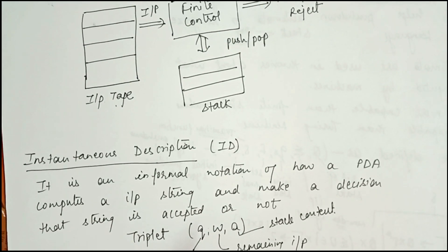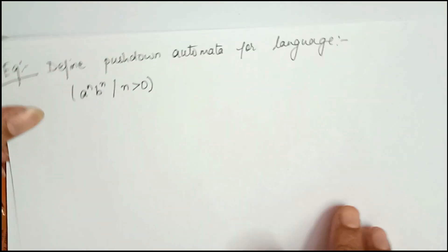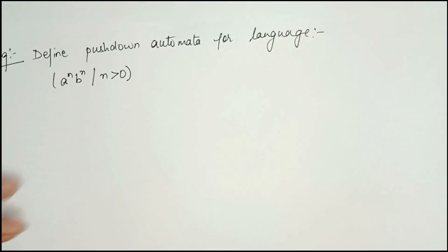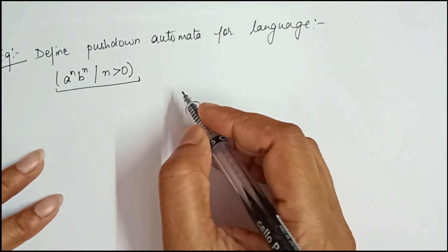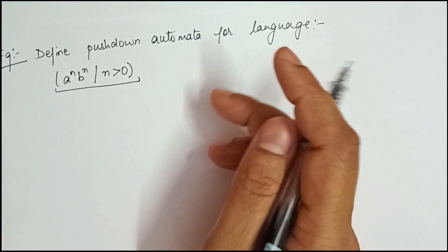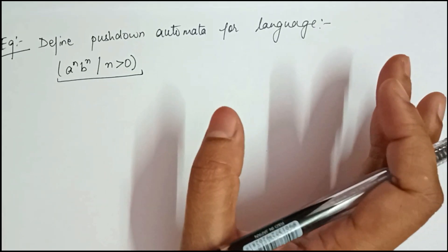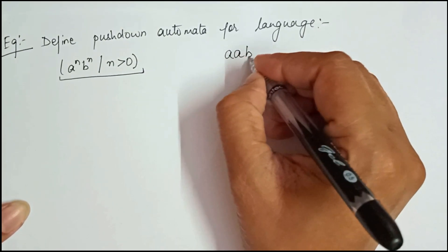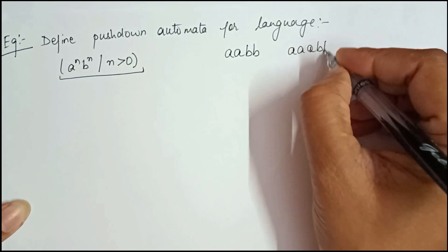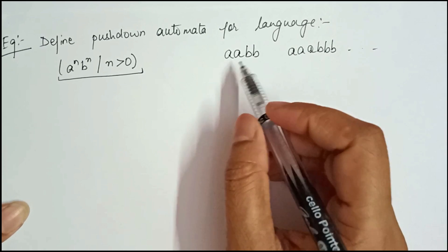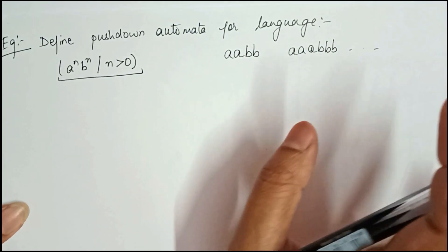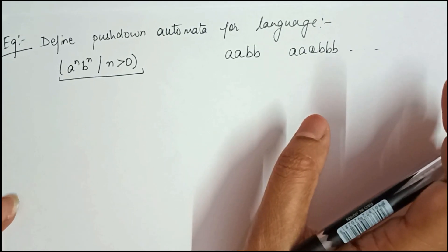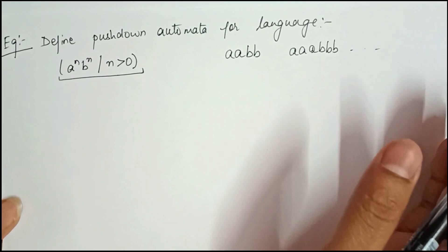Now we are going to discuss an important example on PDA. We have to define a pushdown automata for the language aⁿbⁿ where n > 0. This means the language can be strings like aabb, aaabbb, and so on. We have to construct the pushdown automata for this particular language.